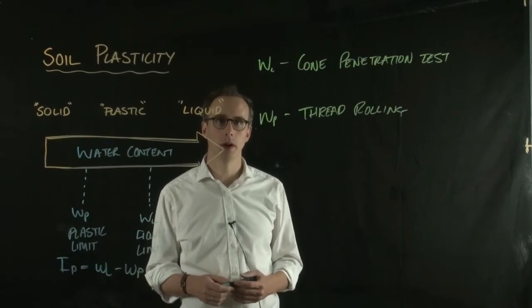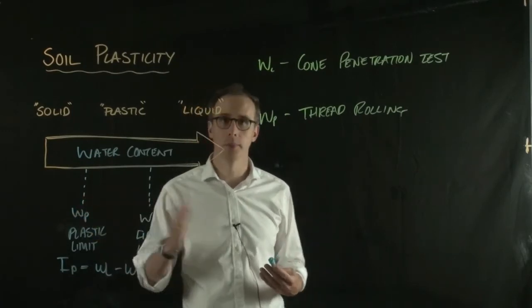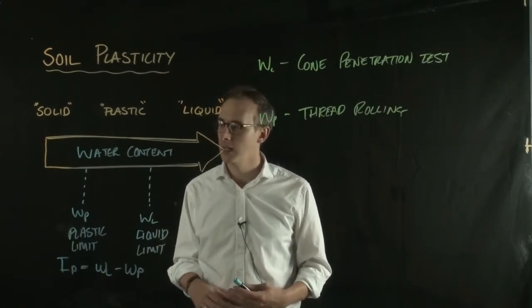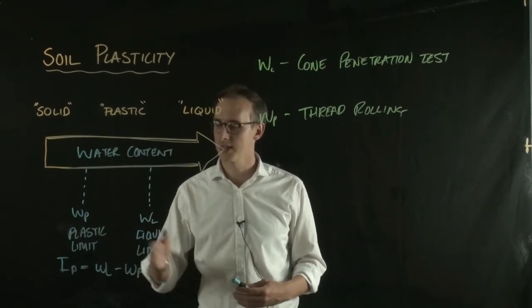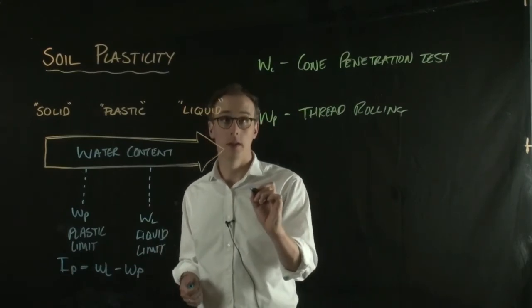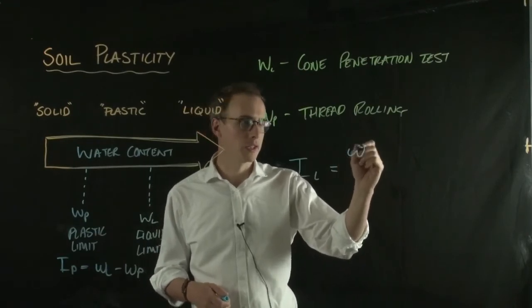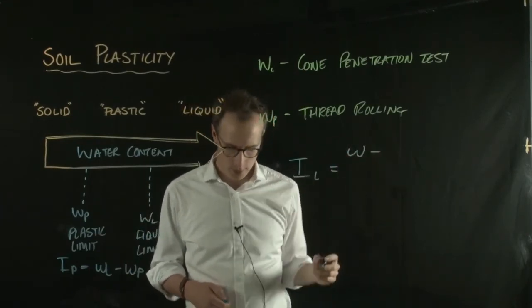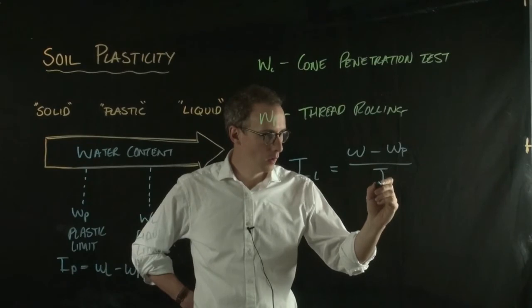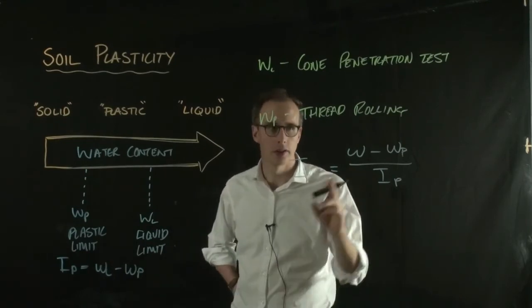So a final thing that's useful to know is where on this scale between the plastic limit and the liquid limit does the soil currently reside? So if you take a sample of soil and you measure the water content, whereabouts is that sitting on this scale? And that is defined through the liquidity index. So the liquidity index, we write as IL. And that's equal to the current water content or the natural water content of the soil minus the plastic limit divided by the plasticity index. And it really just says, whereabouts on this scale is the current natural water content of the soil.